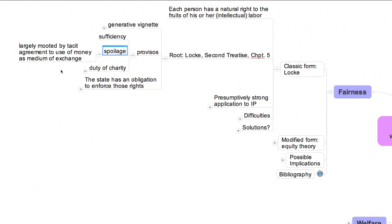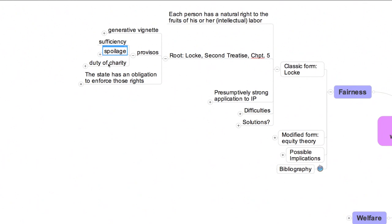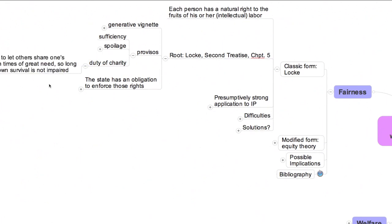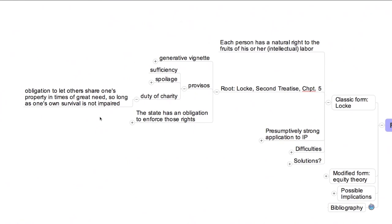The third and last of the provisos, less clearly recognized in chapter 5, but implicit in other portions of Locke's work, is sometimes referred to as the duty of charity. This restriction, emphasized by Wendy Gordon in a pioneering article, entails an obligation to let others share one's property in times of great need, so long as one's own survival is not threatened. So that, in brief, is the core of Locke's general theory of private property.